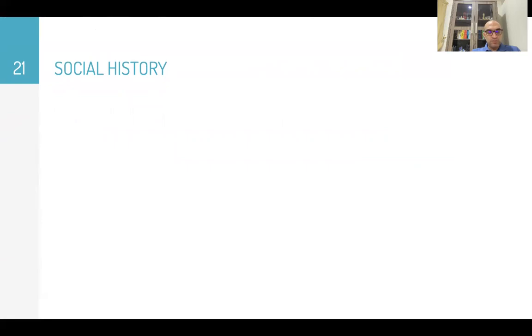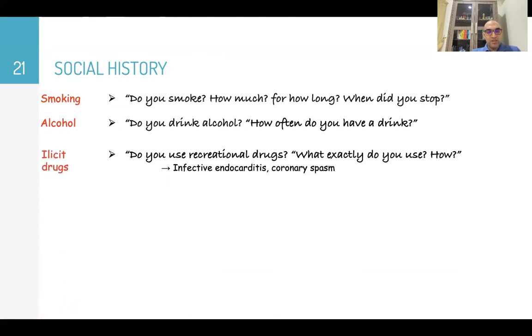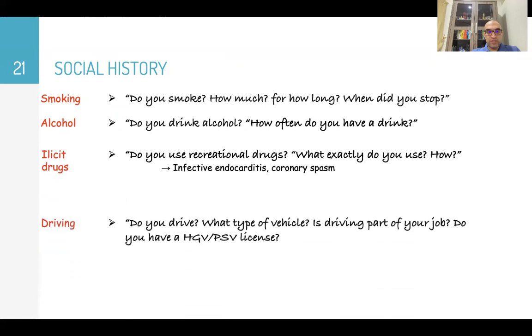Then social history. Ask about smoking. Do you smoke? And how much and for how long do you smoke? And if he stopped smoking, when did you stop? Alcohol. Do you drink alcohol? And how often do you have a drink? Illicit drugs. Do you use recreational drugs? What exactly do you use? And how do you use? Is it injecting needles might cause infective endocarditis or cocaine might cause coronary spasm?